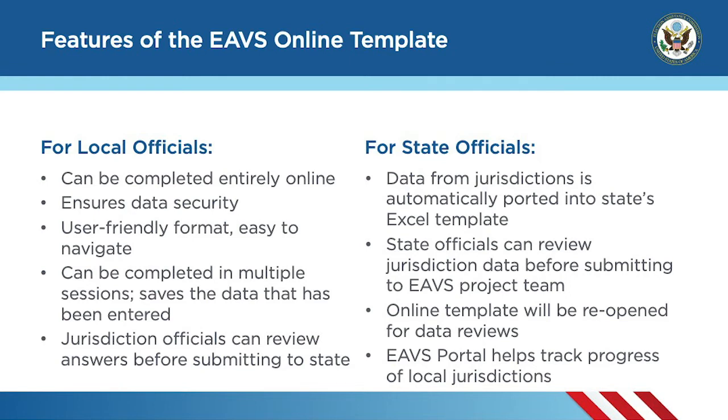The EAVS portal can help you keep track of your jurisdictions' progress through the online template. The state files page of the portal, which requires you to log in with your state's credentials, has a table that lists each of your jurisdictions and their survey status — whether the jurisdiction hasn't started the survey, is in progress, or has already submitted — along with the percentage of questions completed and a timestamp of when the jurisdiction last accessed the online survey. For more details, we invite you to review our data template user guide on the resources page of the EAVS portal. State officials are encouraged to share this user guide with their local jurisdictions.